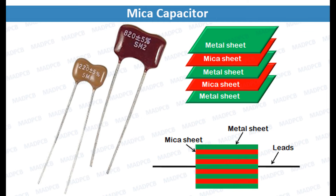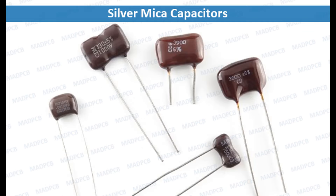The function of a mica capacitor in electronics is similar to that of any other capacitor. When a voltage is applied across the plates of the capacitor, it stores electrical energy in the form of an electric field between the plates. This stored energy can be discharged when needed, providing a temporary power source or filtering out unwanted signals in electronic circuits.